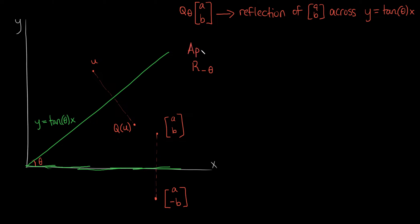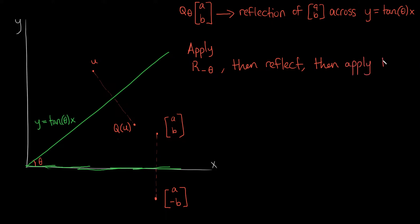So the full plan is: apply R(−θ) to rotate everything by negative theta so the line becomes the x-axis, then reflect — that's the easy step — and finally apply R(+θ) to get back to where we were originally. The solution after these three steps will be the same as the solution to the hard problem of reflecting across y = tan(θ)·x. We rotate everything by negative theta to get an easier problem.